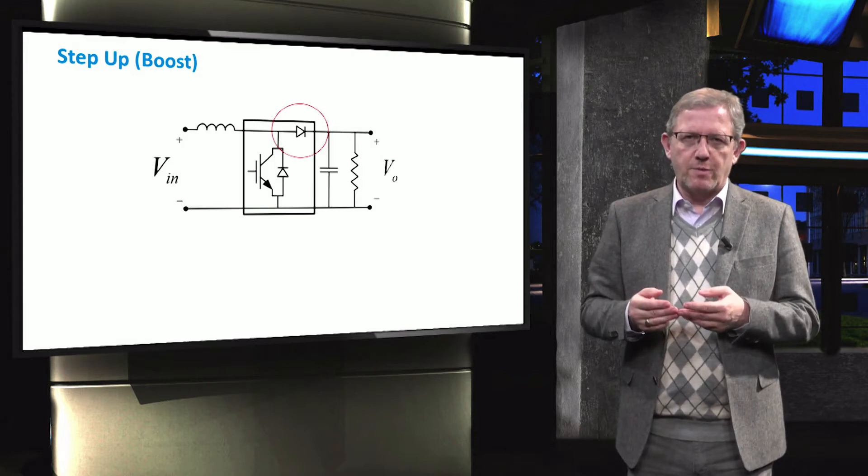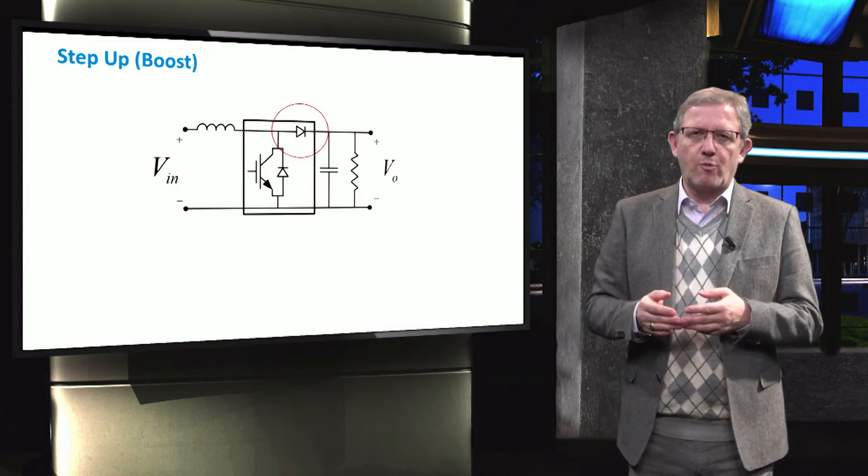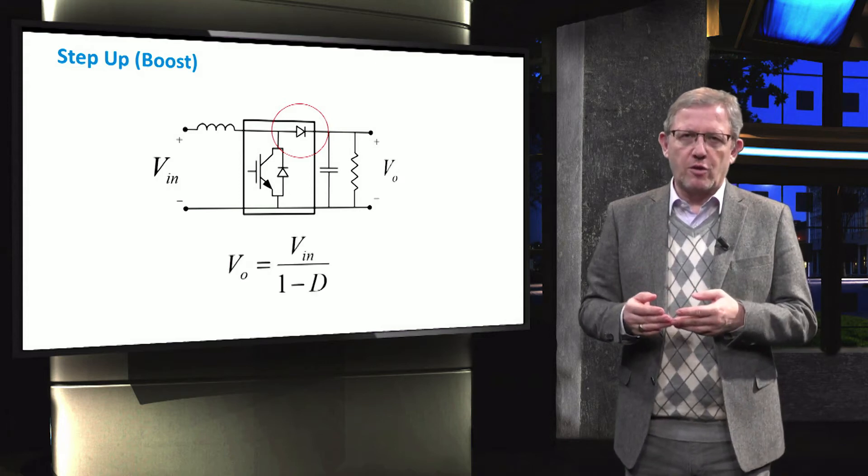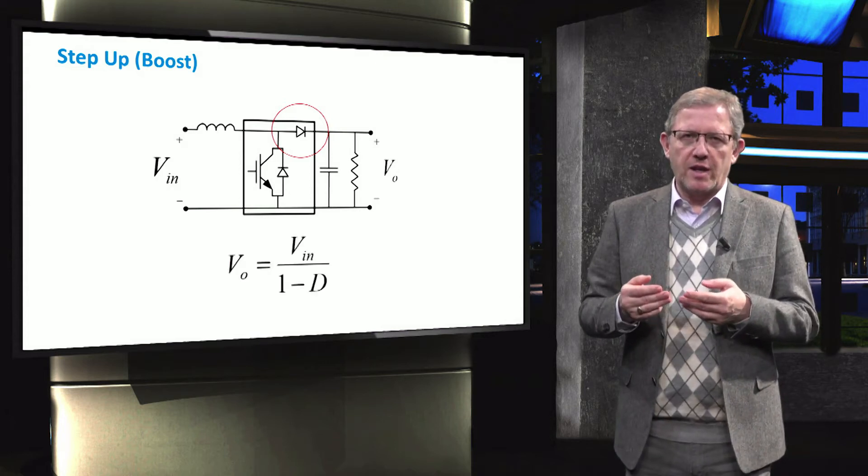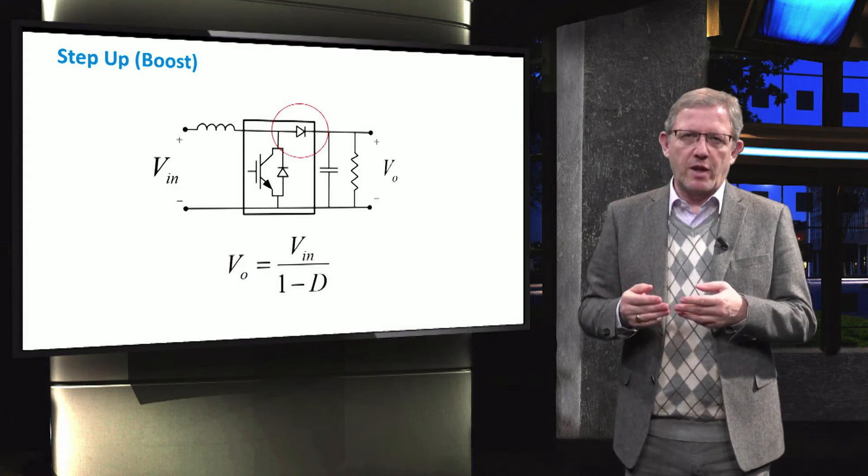Note that due to the placement of the diode at the output, the flow of the current from the output to the input is not possible for a boost converter. The output voltage of a boost converter is calculated by the input voltage divided by 1 minus the duty cycle. This can be proved by a simple equation.